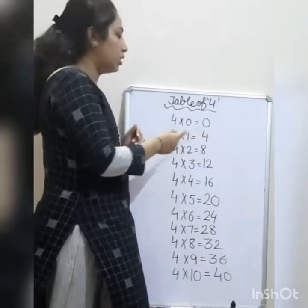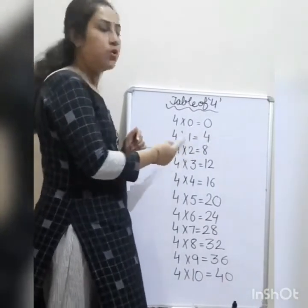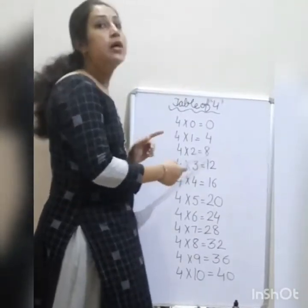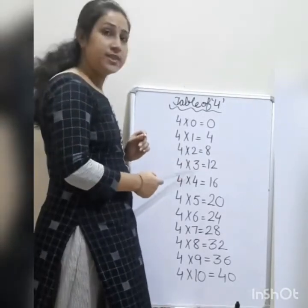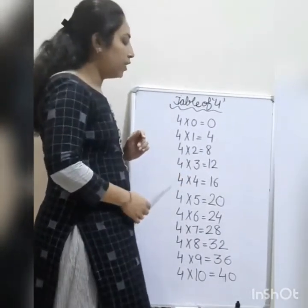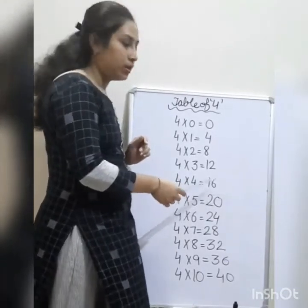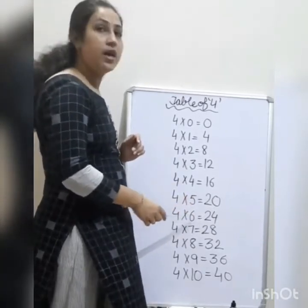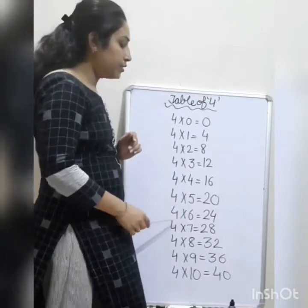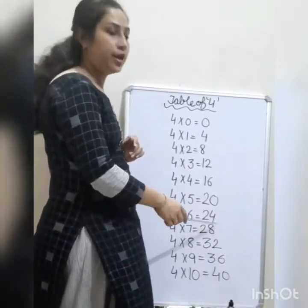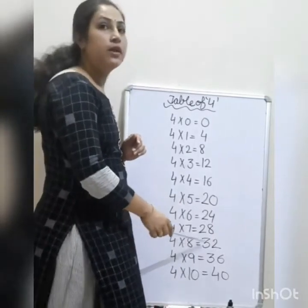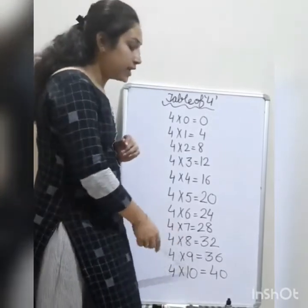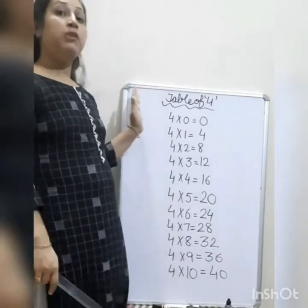Table of 4: 4 0's are 0, 4 1's are 4, 4 2's are 8, 4 3's are 12, 4 4's are 16, 4 5's are 20, 4 6's are 24, 4 7's are 28, 4 8's are 32, 4 9's are 36, and 4 10's are 40. Let's speak again.